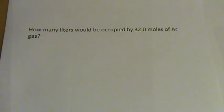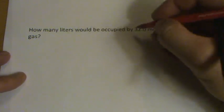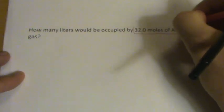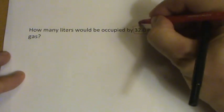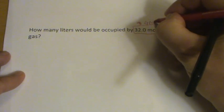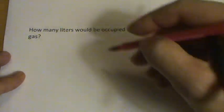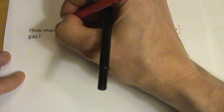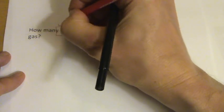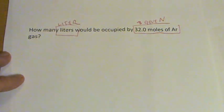This is the same type of problem. We're given 32 moles of argon - this is our given - and they want to know how many liters. So we want to know liters. The only thing is it's written a little different. They've asked you a question.